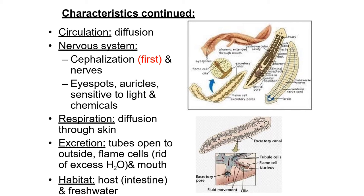Other characteristics of phylum Platyhelminthes: circulation is through diffusion. The nervous system shows cephalization first, and nerves are present. Eye spots and auricles are present, which are sensitive to light and chemicals. Respiration is through diffusion via the skin. In excretion, fine small tubes are present that open to the outside, and these are called flame cells — they rid the body of excess water. Habitat: they are present in the host's intestine and sometimes in fresh water.